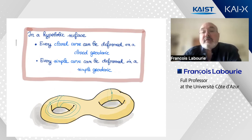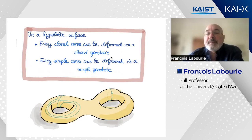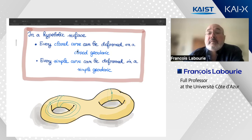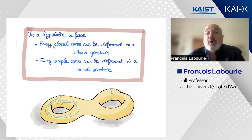A basic result of hyperbolic geometry, taught to students from the start: any closed curve on a hyperbolic surface can be deformed to a closed geodesic, and moreover this closed geodesic is unique — no two closed geodesics can be deformed into one another. So the set of closed geodesics is the same as closed curves up to deformation, which is a purely topological object. The same holds for simple curves: every simple curve can be deformed to a simple geodesic.